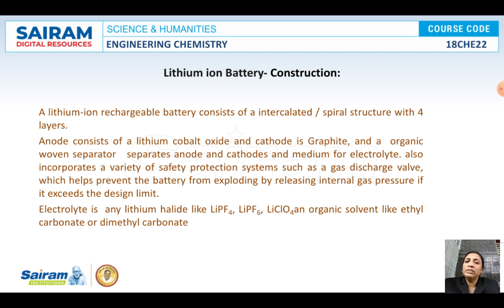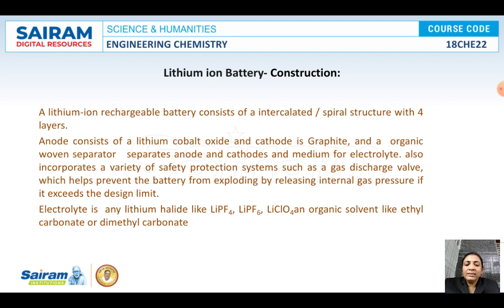So we are using intercalated structures, and we are using graphite as it has an intercalation structure. Here in the lithium ion battery, the anode is lithium cobalt oxide. LiCoO2 is used as the anodic material and the cathode is graphite. An organic solvent separator will be there, which separates the anode and cathode and also serves as the medium for the electrolyte. A variety of design options are available in lithium batteries — different sizes and shapes are available in the market.